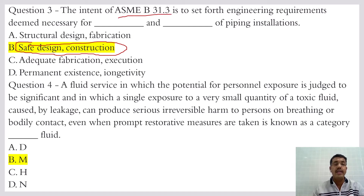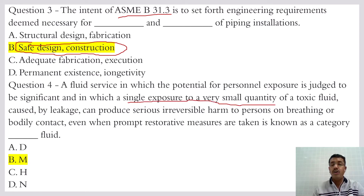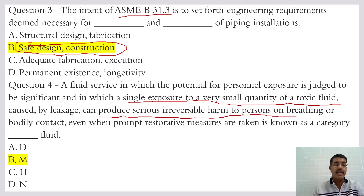A fluid service in which the potential for personnel exposure is judged to be significant, and in which a single exposure to a very small quantity of toxic fluid caused by leakage can produce serious irreversible harm to a person, is Category M fluid.